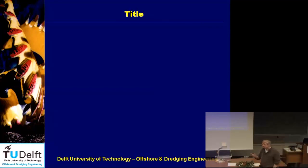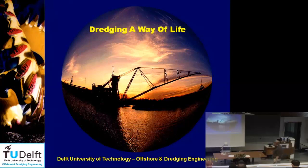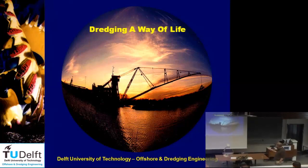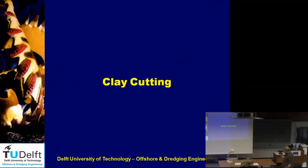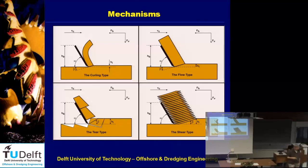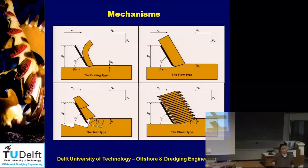That concludes the lecture about sand cutting. After the break I will do clay cutting. In clay, you have three types of failure. In sand we only had one — the shear type — but we acted like it's a flow type, a continuous process, because in calculating the under-pressures we didn't account for the cyclic nature of the shear planes. In clay you never have the shear type.